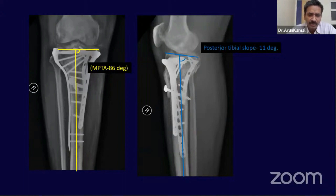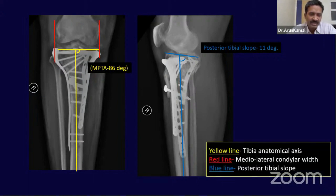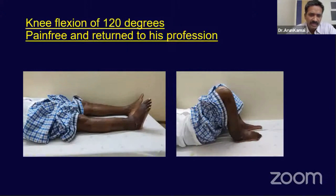A few things to note: there is some articular incongruity on the lateral side, the posterior tibial slope has slightly increased to 11 degrees, and the proximal medial tibial angle is 86 degrees with subtle condylar widening. However, this patient had a reasonably good functional outcome — 120 degrees of knee flexion and return to normal profession.